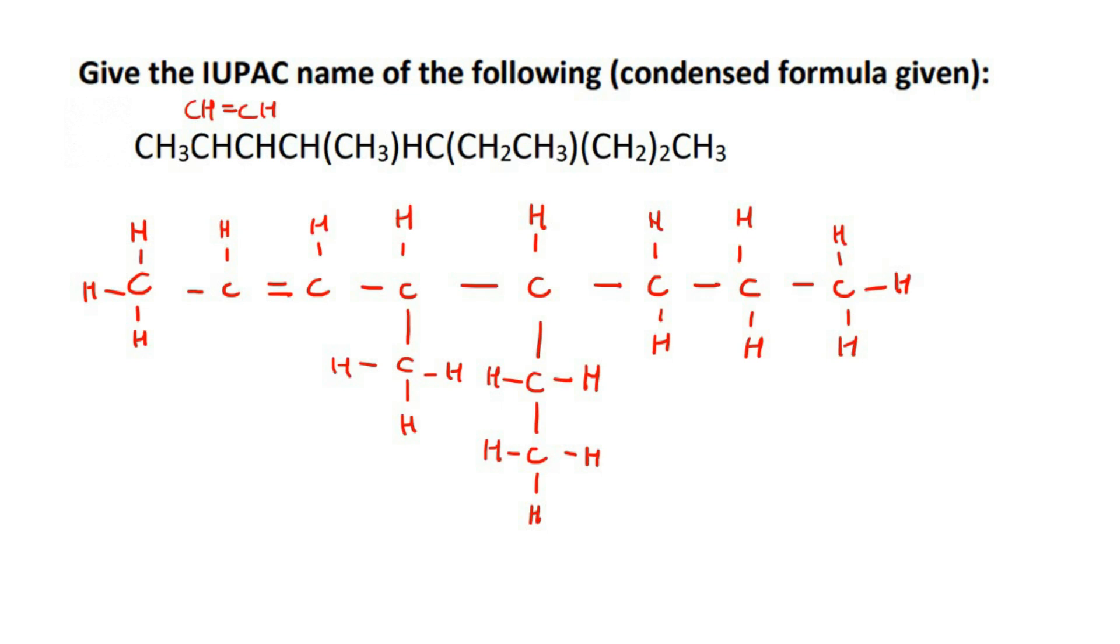Now we need to come up with the name of this huge molecule. So this is our main chain: one, two, three, four, five, six, seven, eight carbons. Okay, so eight means oct. Now we have to label it from the left because the functional group is over here and you always label from the side that is closest to the functional group. So, okay...